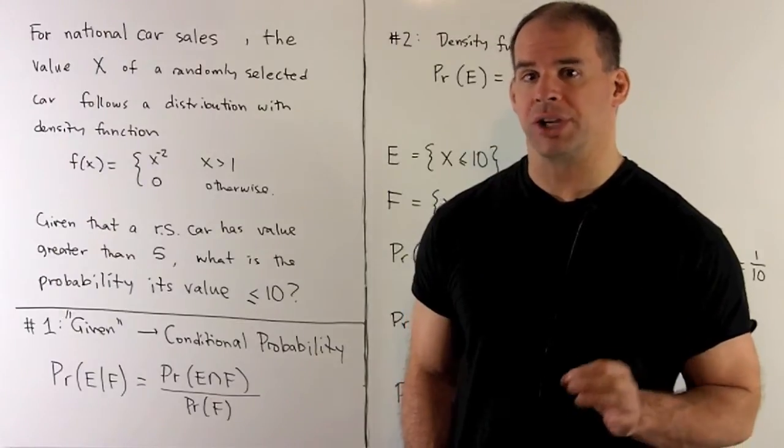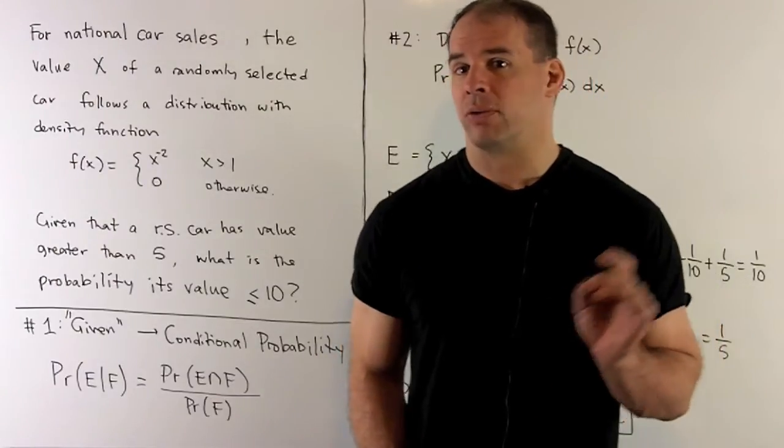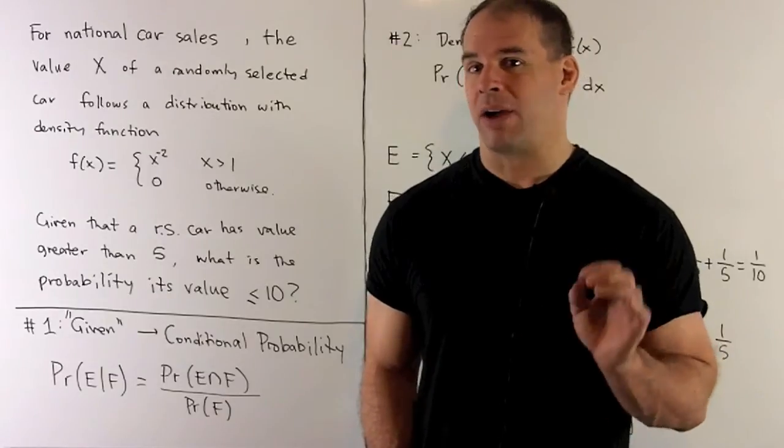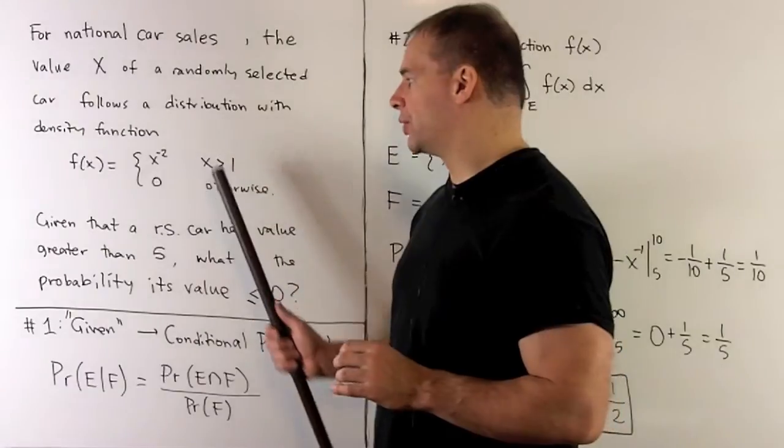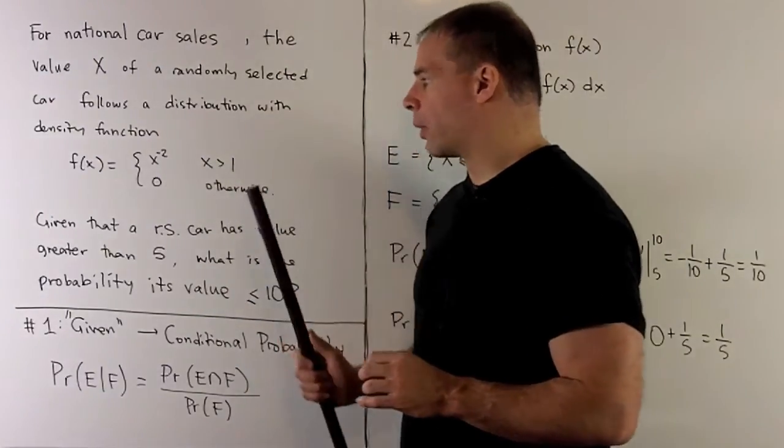Consider annual national car sales. The value of a randomly selected car is given by a random variable with density function x to the minus 2 when x is greater than 1, and 0 otherwise.